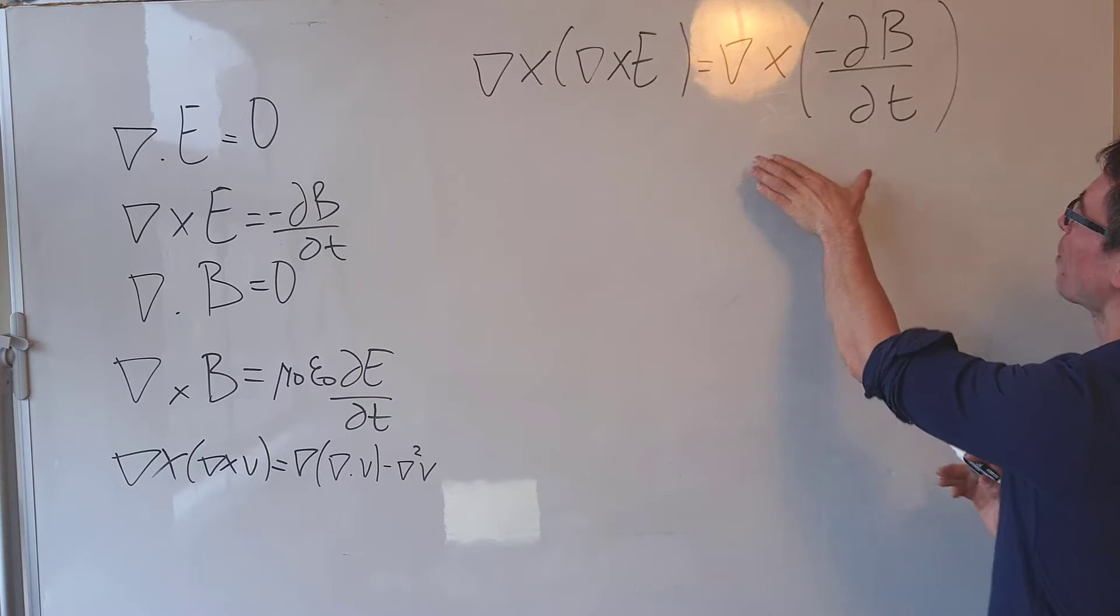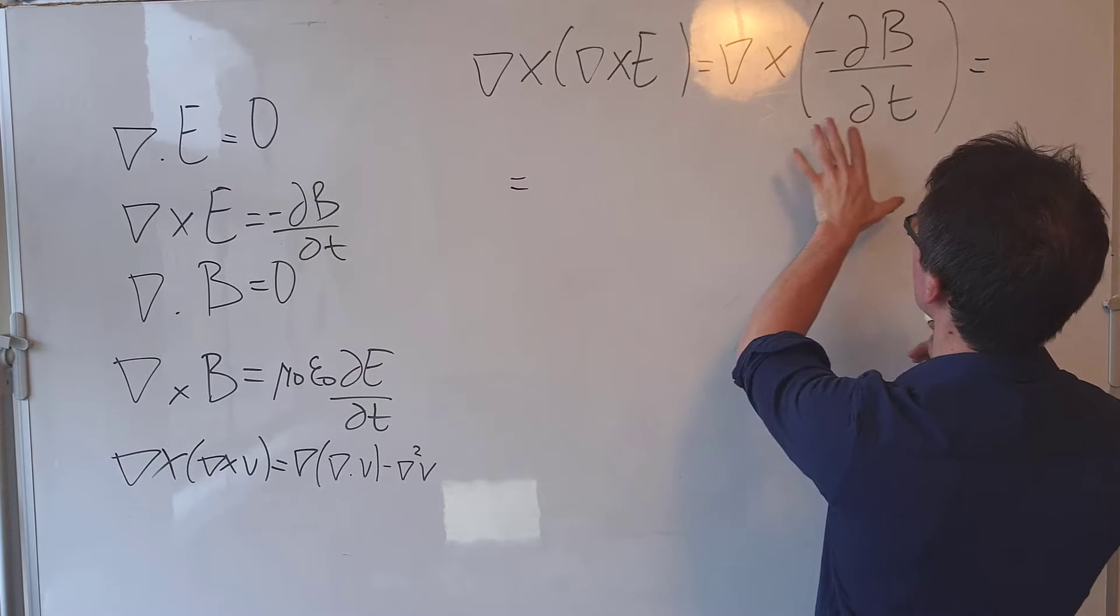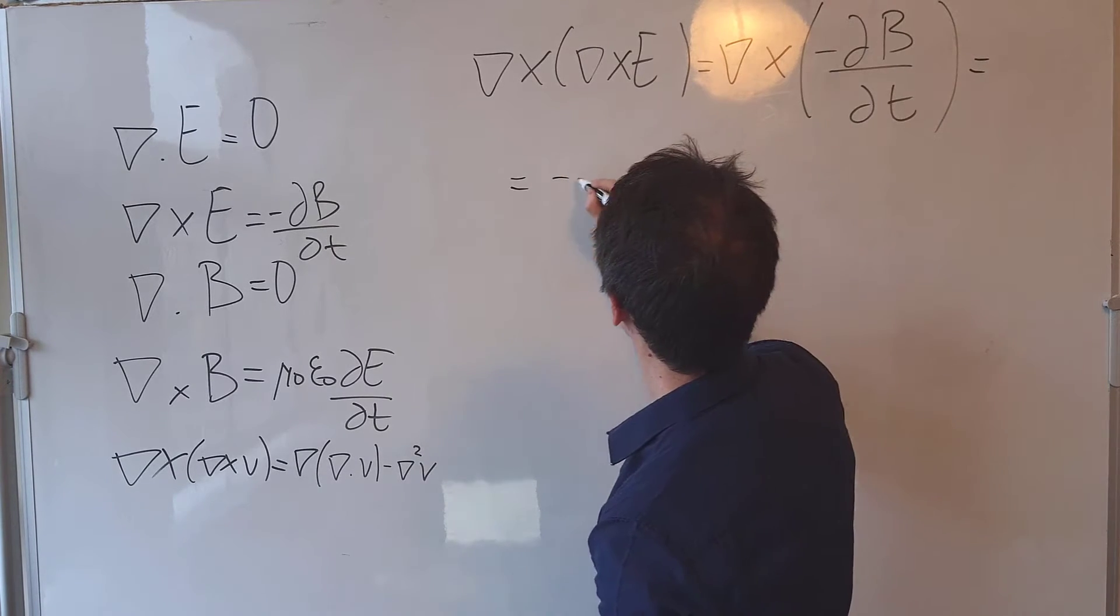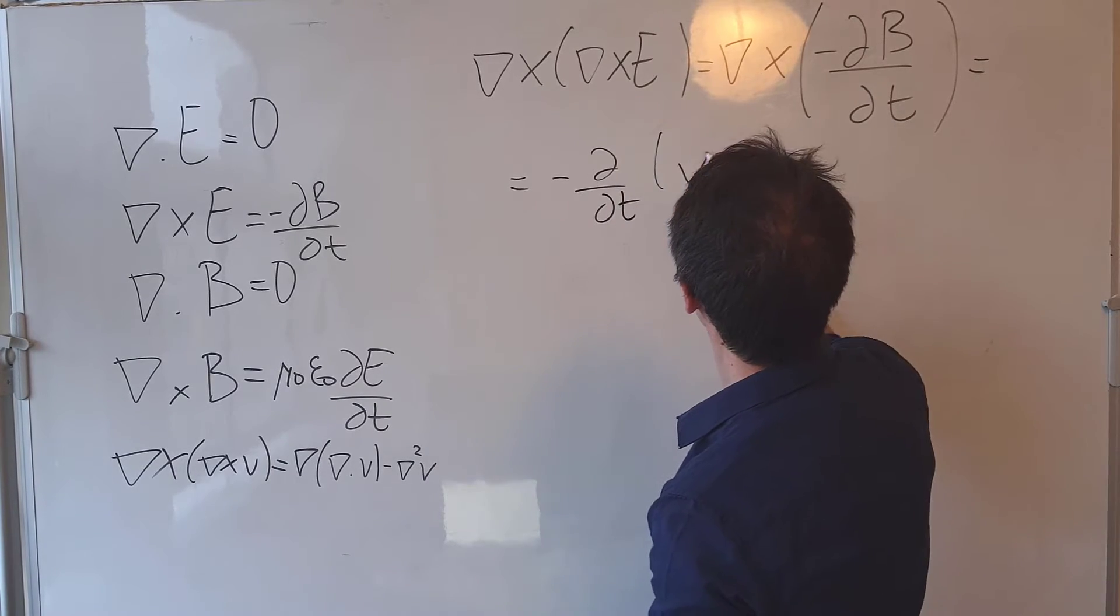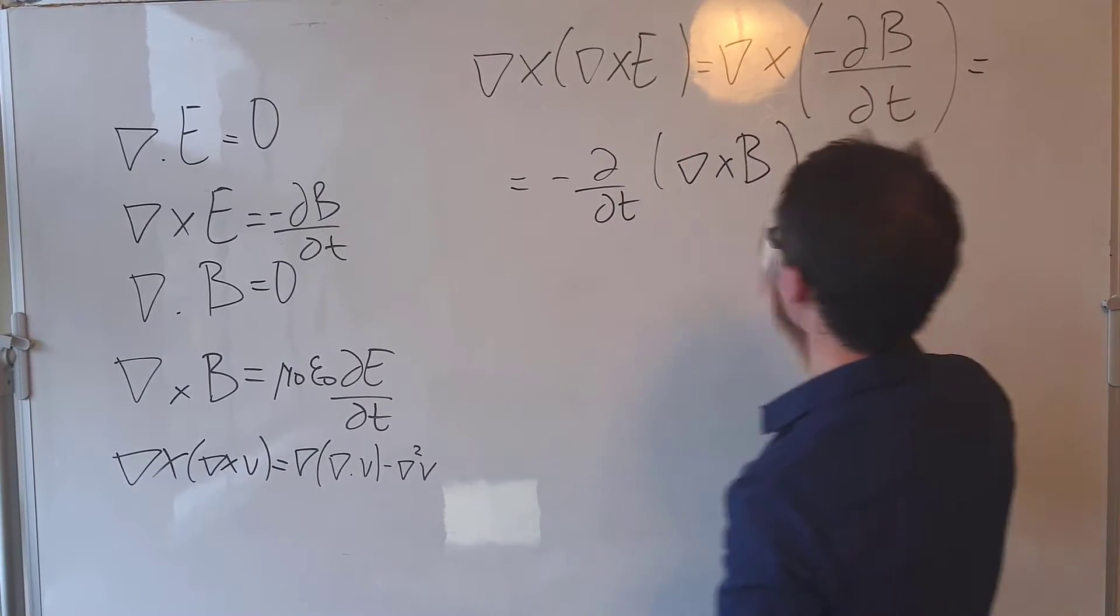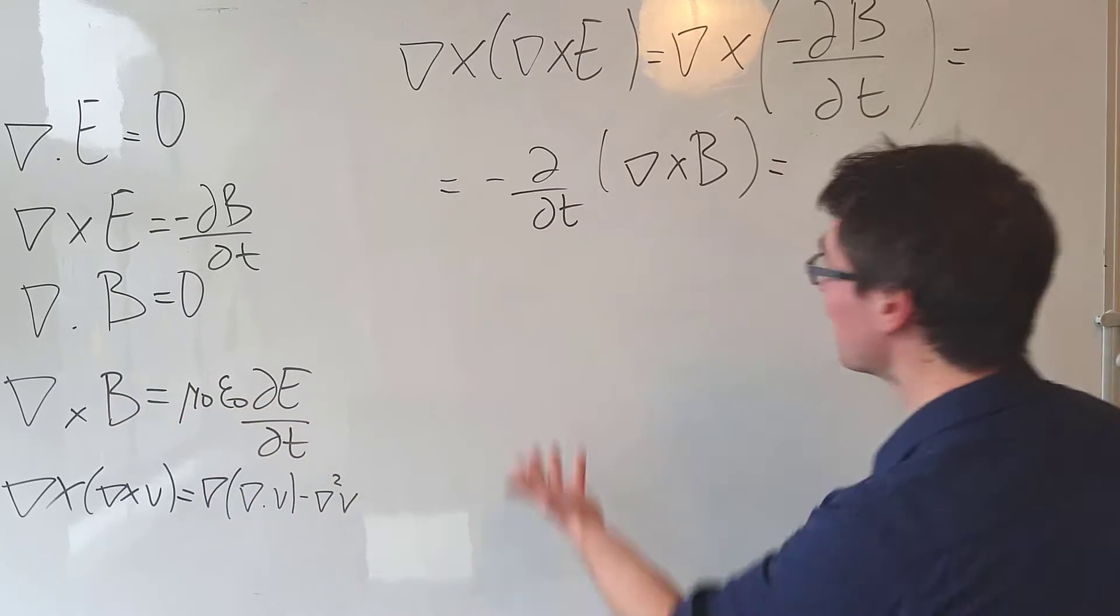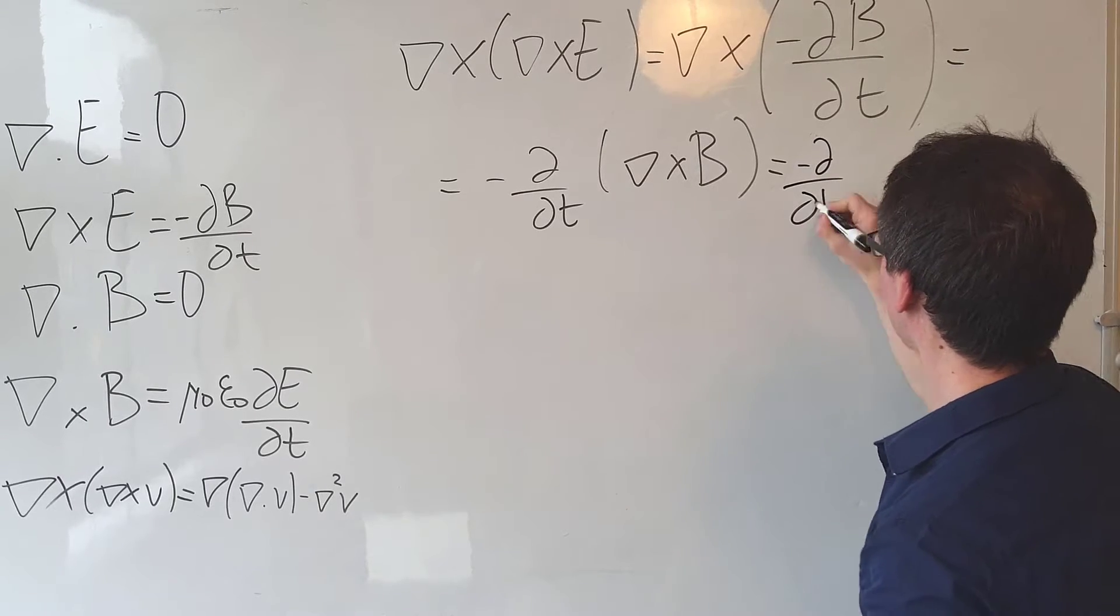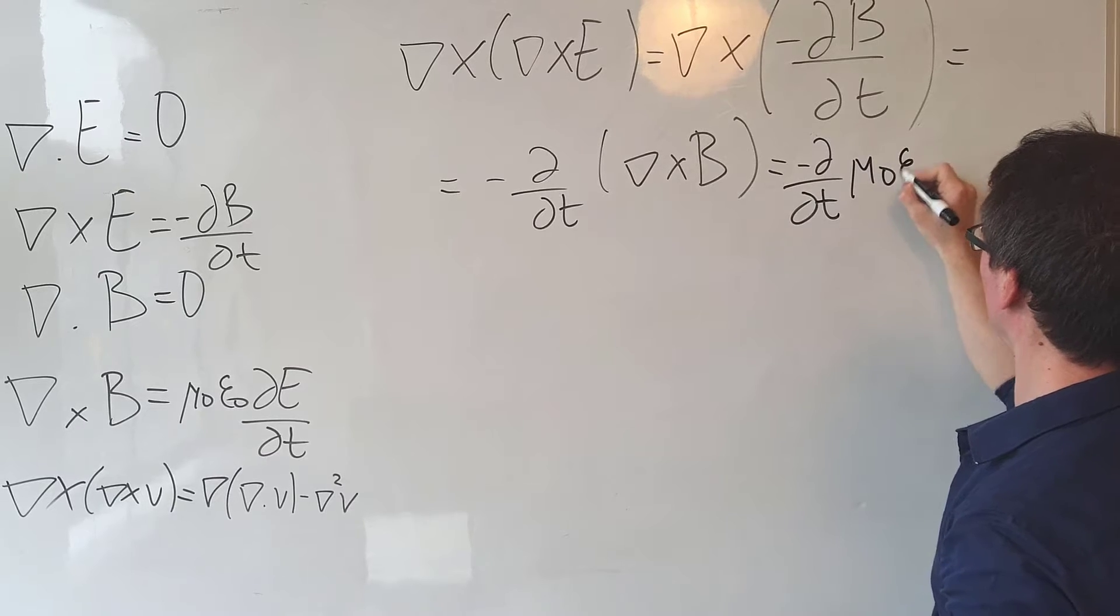These are just linear operators, so I can take the derivative outside of these brackets. And what we'll have is negative dB/dt of the curl of B. But hang on a minute, we already have an expression for the curl of B just here. So this means I can write this as the negative time derivative of the curl of B, which is equal to μ₀ε₀ where those two are just constants.